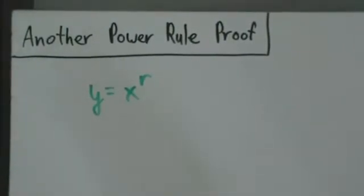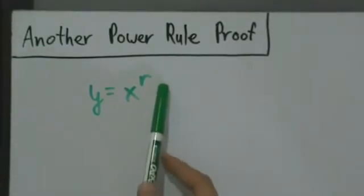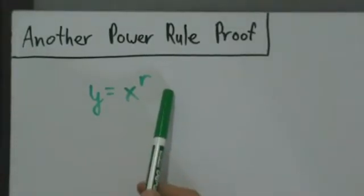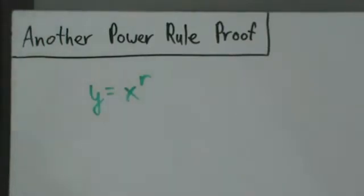Okay, so here's another proof of the general power rule. If we have y equals x to the r, where r is any real number at all—positive, negative, zero, any kind of fraction, any kind of irrational number—we want to see what the derivative of that is going to be.